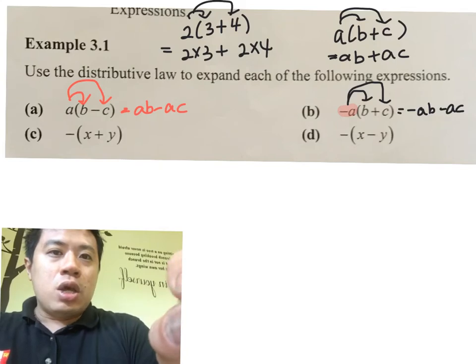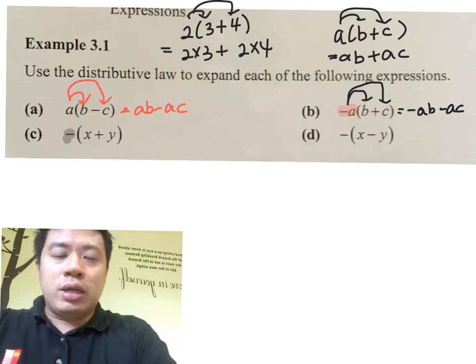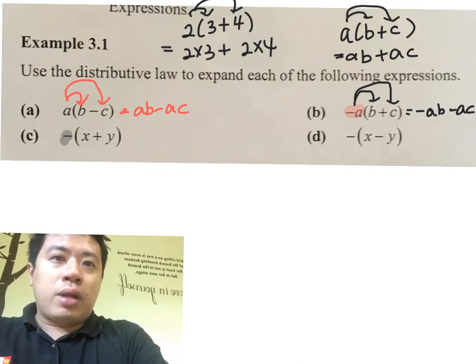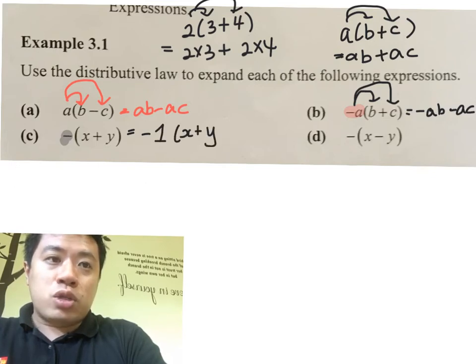In C, you have a negative sign. I treat it like negative 1. This is as though I'm distributing negative 1 to x plus y. A 1 is trivial; it's as though it's not there.